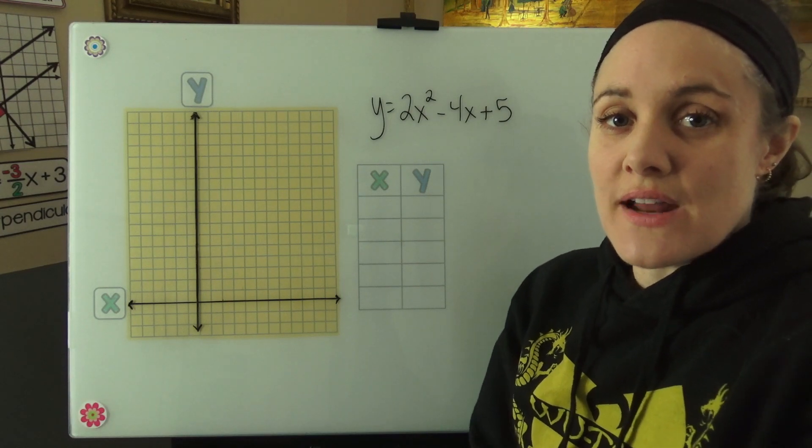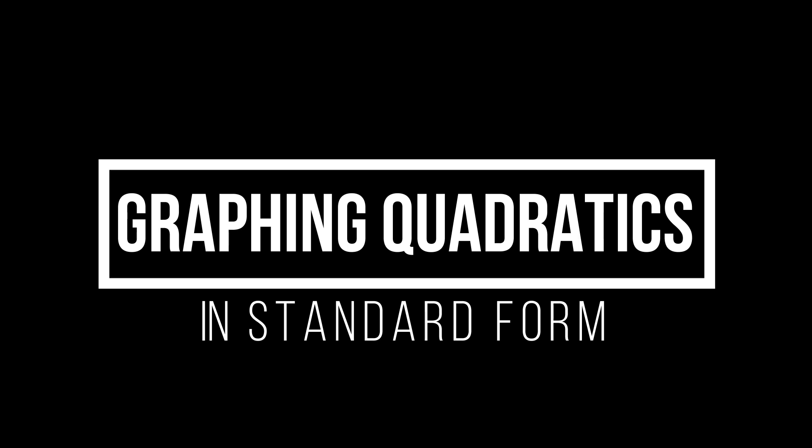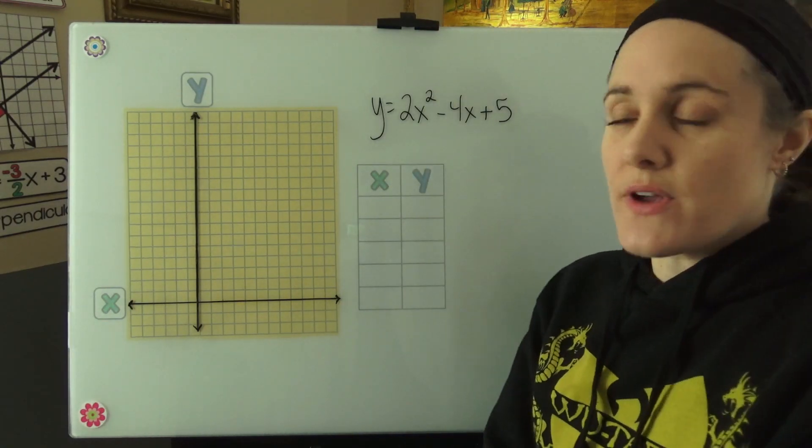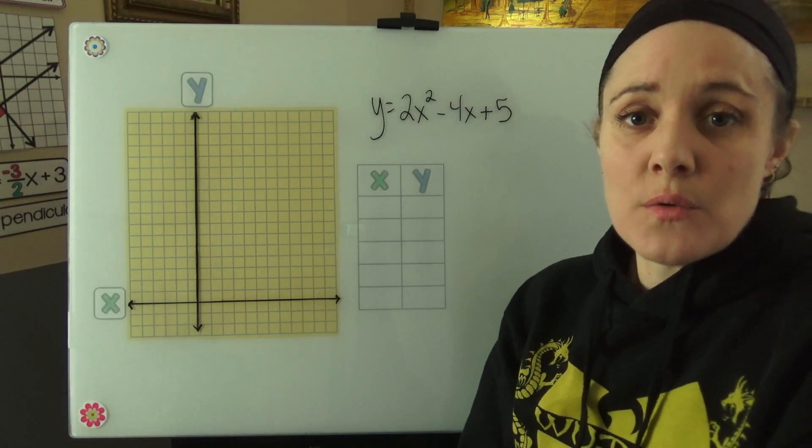Hi! Today we're graphing standard form quadratics. I chose a standard form quadratic, y equals 2x squared minus 4x plus 5, and we're just going to graph this thing and see what it looks like.